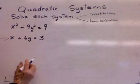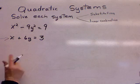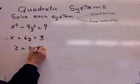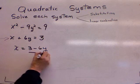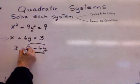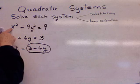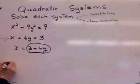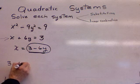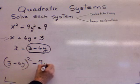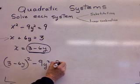And this linear system solves for x rather easily. Watch this, x equals 3 minus 6y. Now, this is going to be my substitution. I'm going to place, in place of that x, 3 minus 6y. So, 3 minus 6y squared minus 9y squared equals 9.